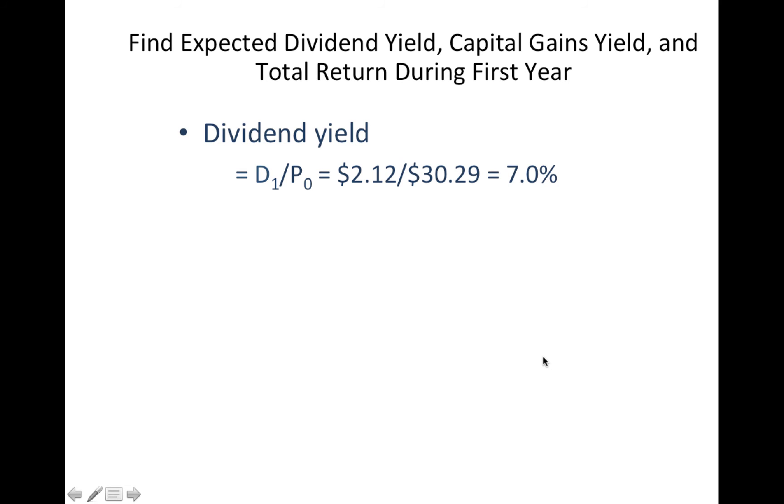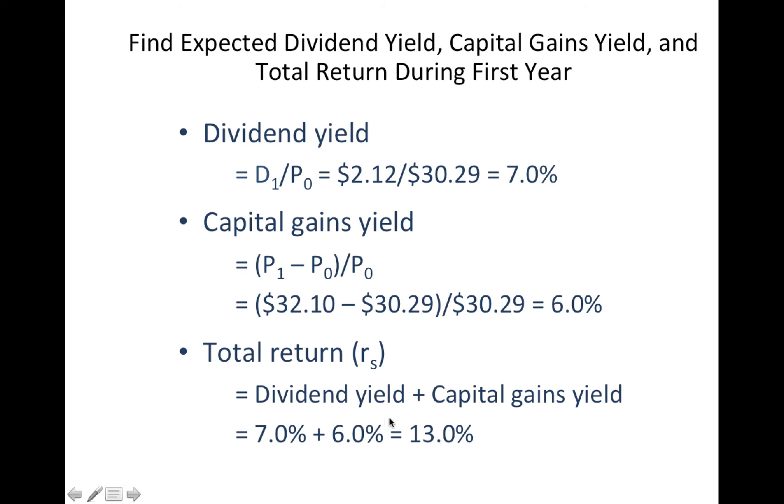What would be the dividend yield of this company? The dividend yield would have been the dividend divided by the price, which is 7%. And the capital gains yield would have been the price at 1 minus the price at 0, the gain that we made, divided by the price at 0, which is 6%. And remember what we talked about, the capital gain and the dividend yield? Both of them, when they add them up, give you the required return of 13%. So how do you make this 13%? 7% of it comes from the dividend in this company, and 6% from price appreciation.